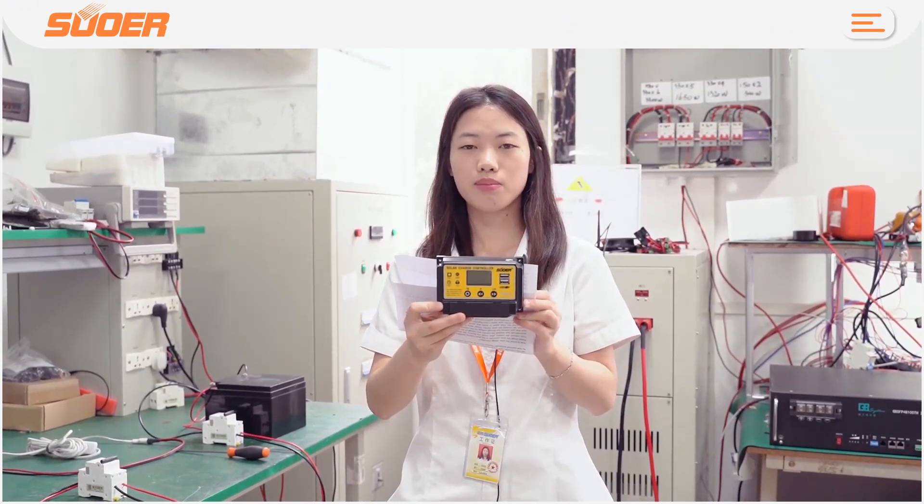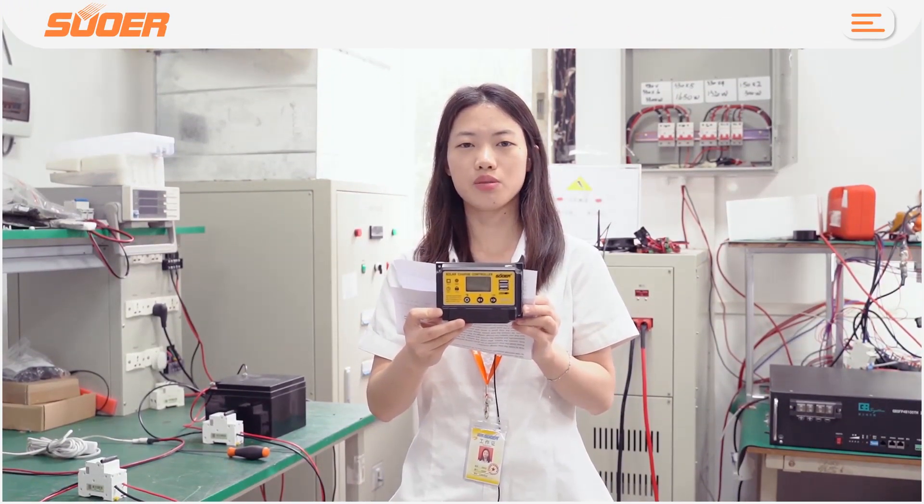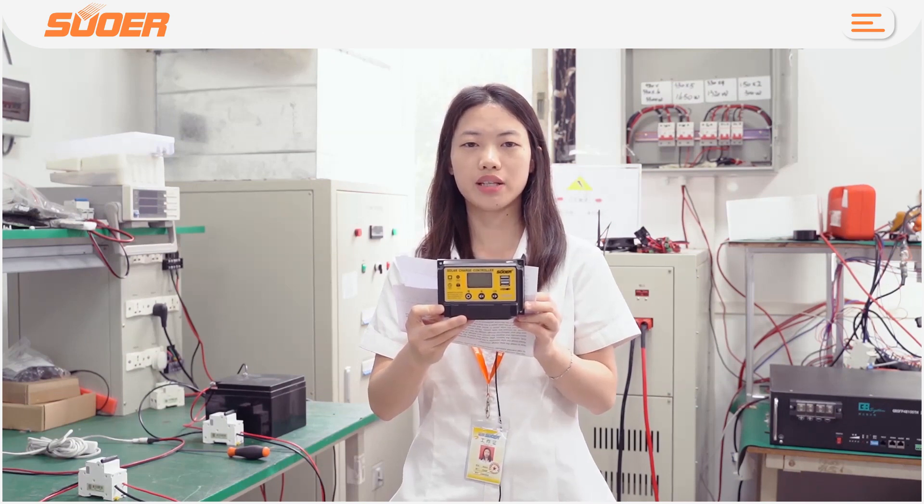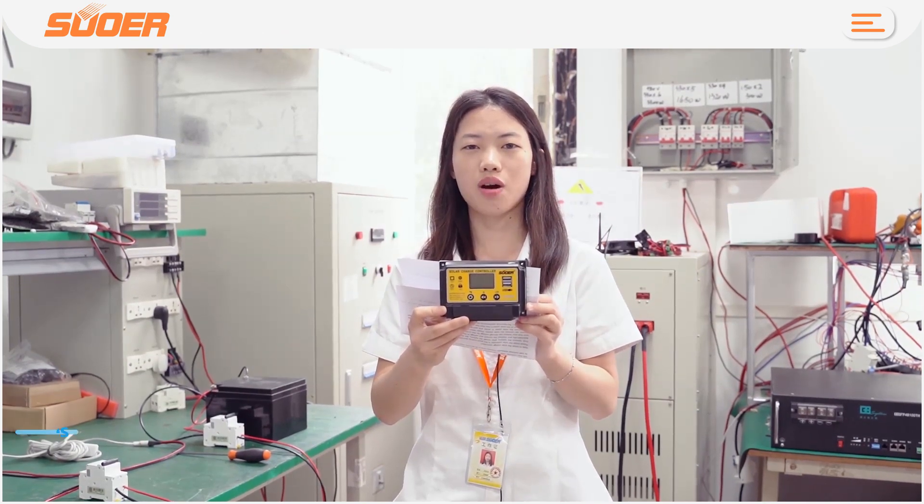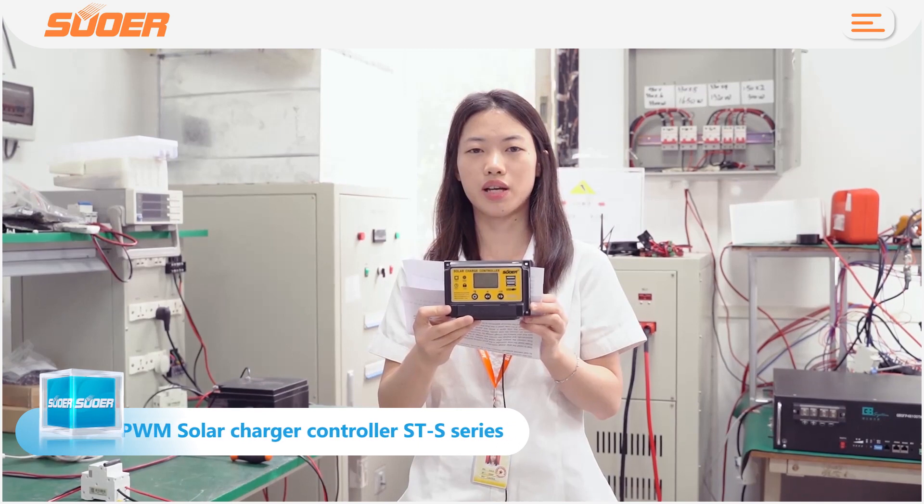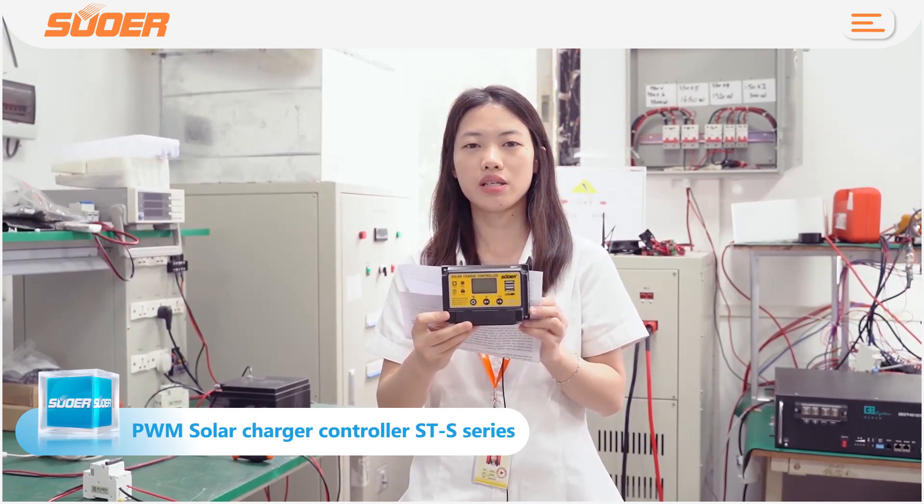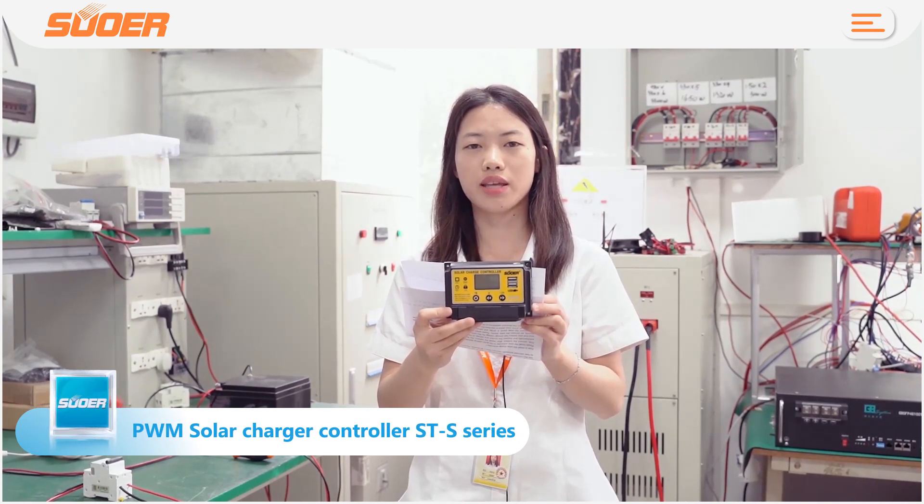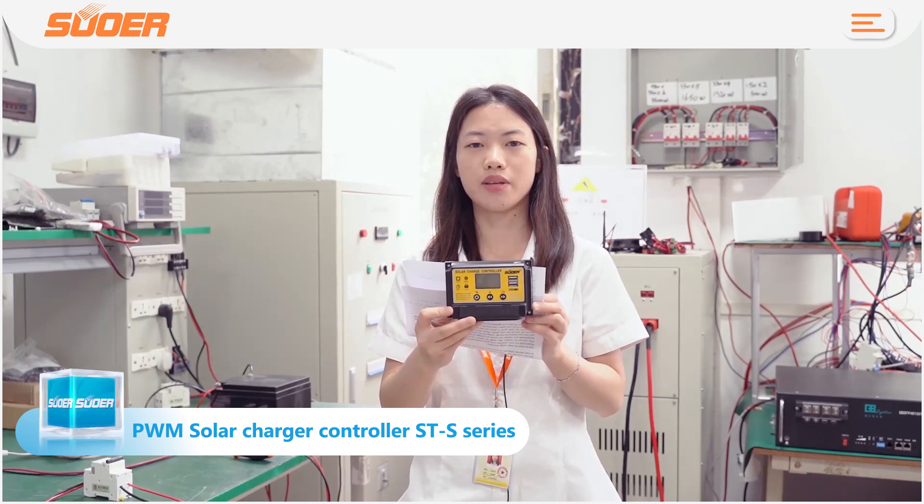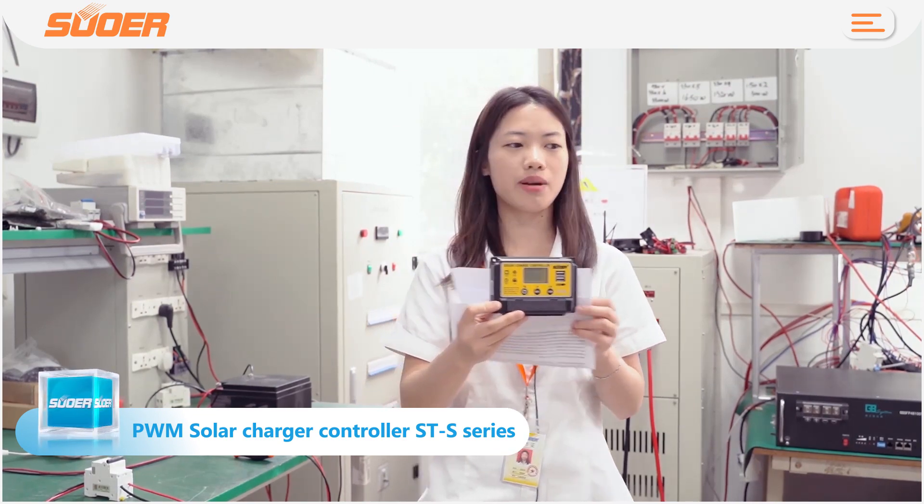Hello everyone, welcome to our live room. This is Venus from Suder Solar Company. Today let me introduce our PWM solar charge controller ST-S series. Its charge current options are 10 amp, 20 amp, and 30 amp.